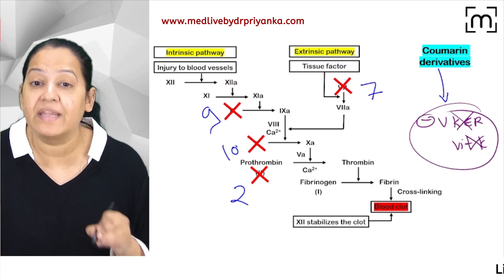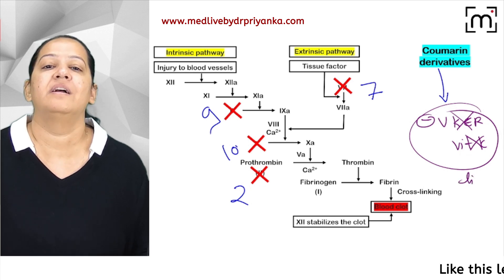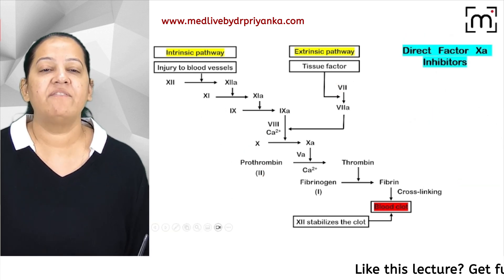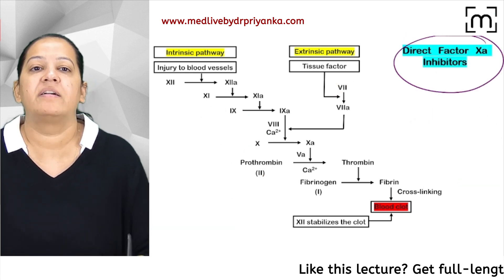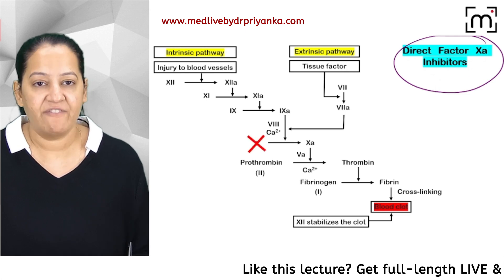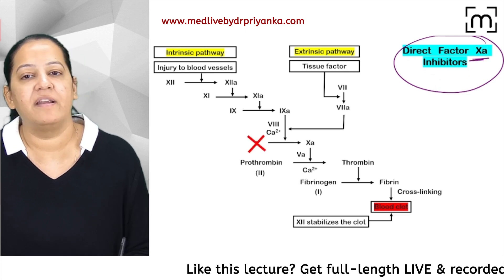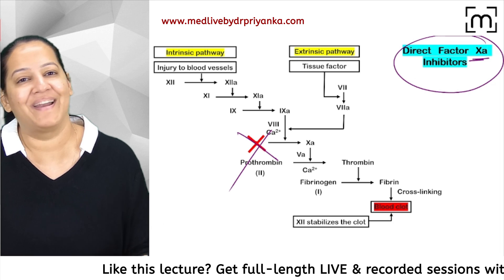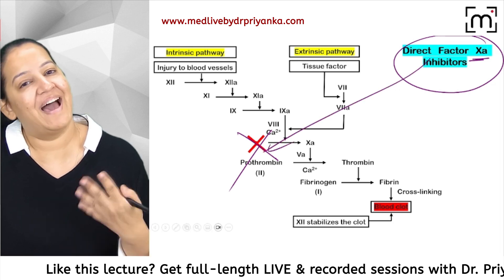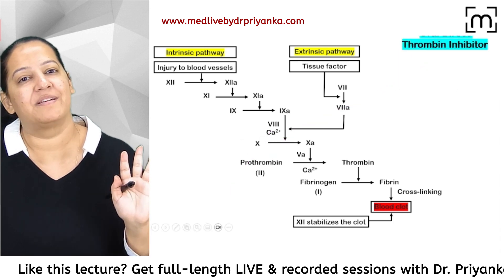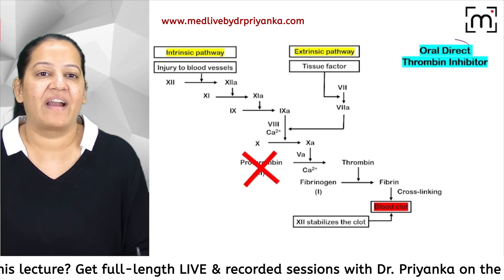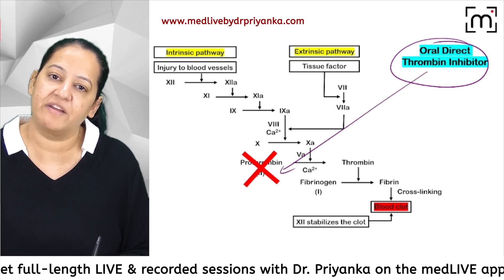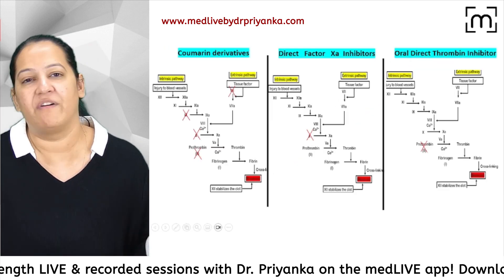The second category of oral anticoagulants is direct factor Xa inhibitors. As the name indicates, they inhibit factor 10 only — directly, without the need for vitamin K. The third category is direct factor 2a inhibitors — direct thrombin inhibitors — which inhibit factor 2 directly, also without the need for vitamin K.